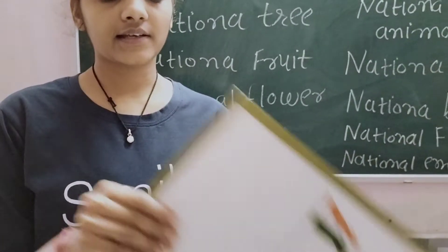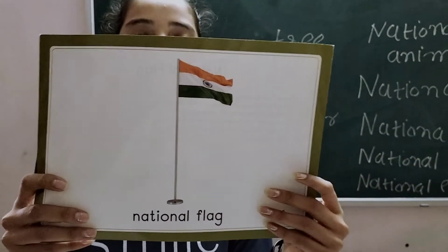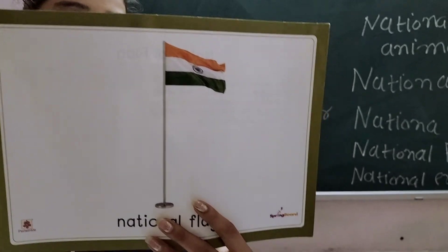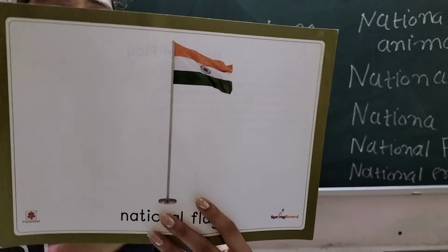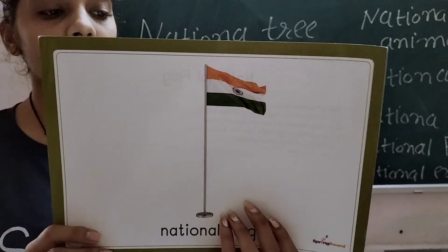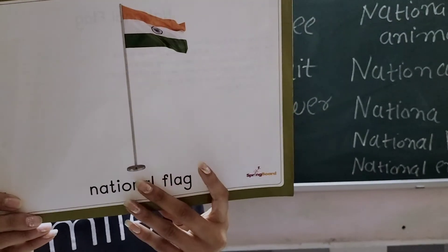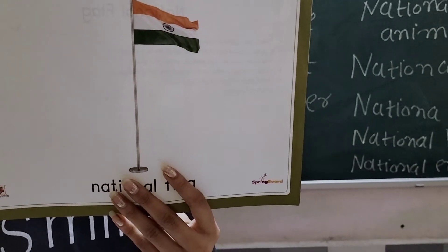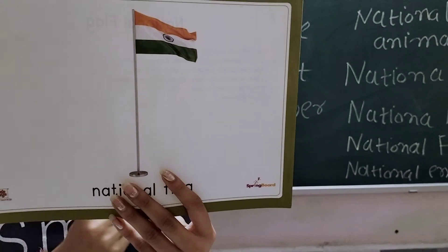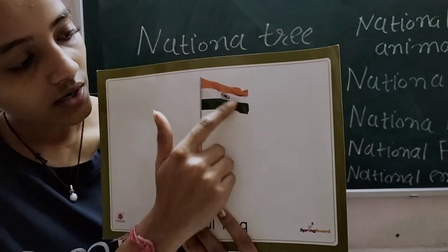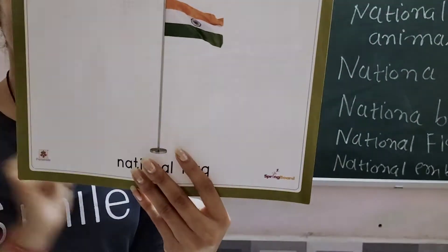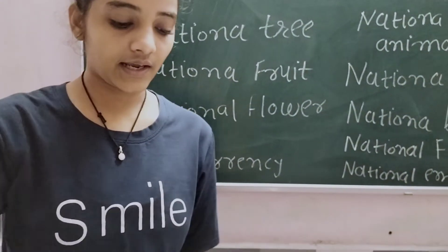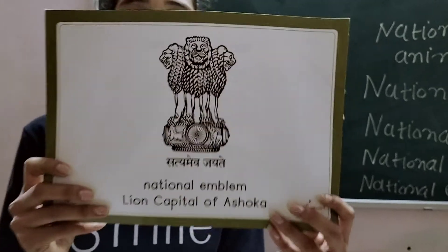Next is the national flag. It is a tricolor — it is made up of three colors: saffron, white, and green. It has a wheel in the middle called the Ashoka Chakra, and the Ashoka Chakra is blue in color. You will see all of them. Which one is the Ashoka Chakra? Which one is blue? It has twenty-four spokes.